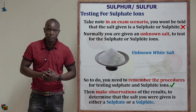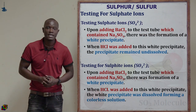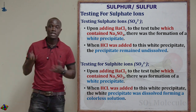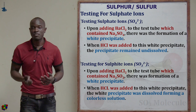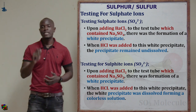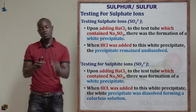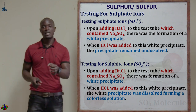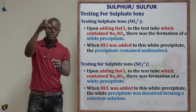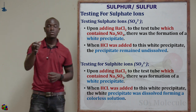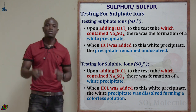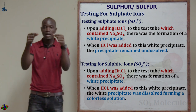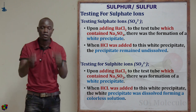Now for the observations: when barium chloride was added to both the sodium sulfate and the sodium sulfite test tubes, a white precipitate was formed in both. So both test tubes showed a white precipitate as soon as barium chloride was added.